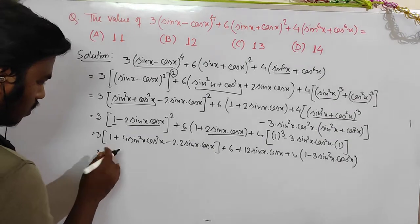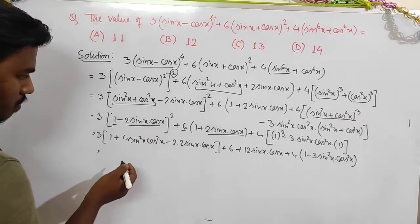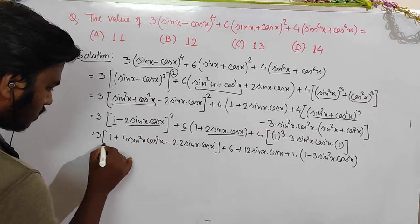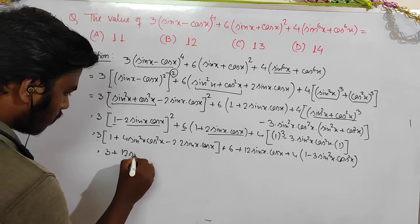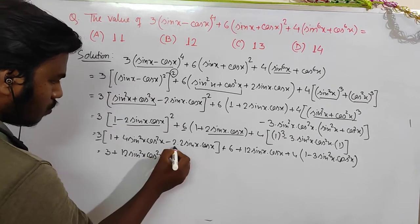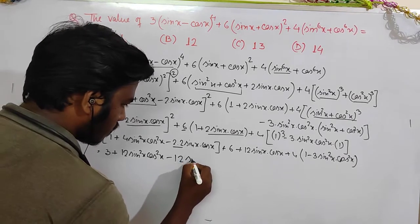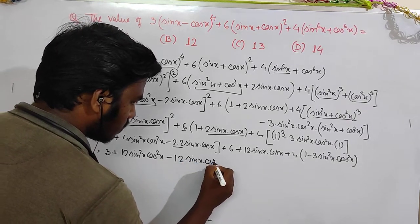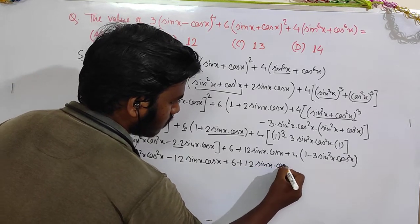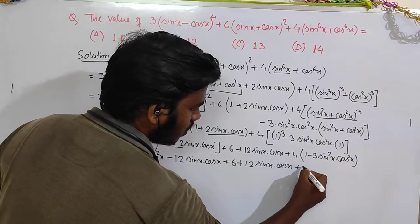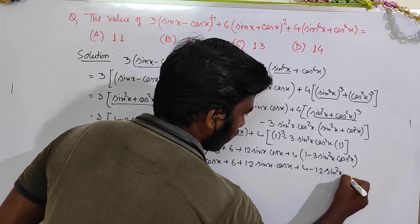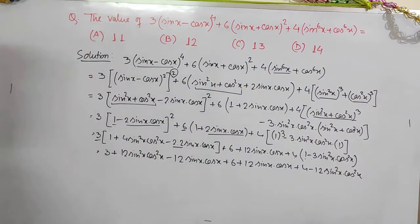So collecting terms: 3 plus 3 into 4, that means the sin squared x cos squared x terms — minus 3 into 4 gives minus 12 sin x cos x, plus 6 plus 12 sin x cos x, plus 4 into 1, minus 4 into 3 sin squared x cos squared x. The variable terms cancel, confirming the expression is constant.